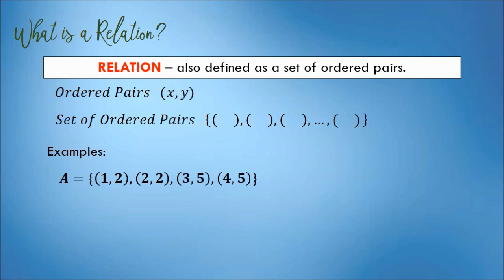Another example, we have a set of ordered pairs B. B is equal to: 1 comma 3, 1 comma 4, 2 comma 5, 2 comma 6, and 3 comma 7, separated by commas, enclosed in a pair of braces. The set represents or shows a relation.